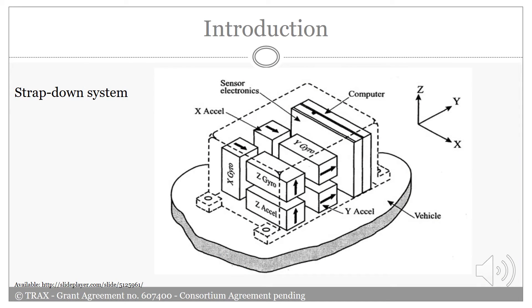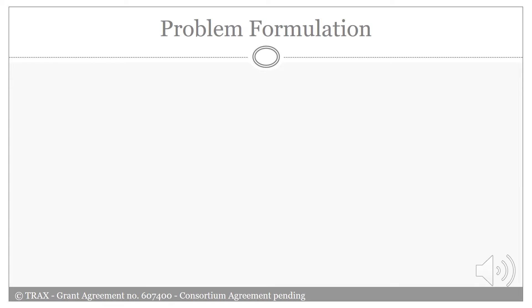Traditionally, pedestrian navigation systems use micro electromechanical systems or MEMS in order to locate the mobile user when GPS signals are blocked. Strap-down inertial navigation system is one of the examples of pedestrian navigation systems that take advantage of MEMS sensors for positioning process.